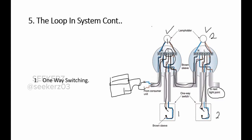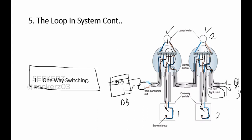If we have another lighting point we will do the same looping method. We use the loop terminal and take the phase conductor, and from the neutral terminal we take the neutral conductor to the third lighting point. Starting from the distribution board, we loop all these bulbs together and connect them as a radial circuit. This is how we wire a one-way switch using ceiling roses.